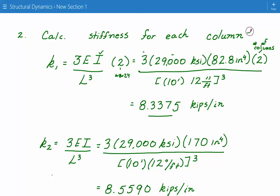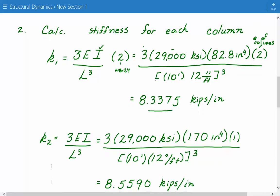If it was some other support condition like fixed, this would be a different expression. So we just plug in the numbers. 3 times 29,000 KSI times the second moment of inertia, which is 170 inches to the fourth power. And in this case, we're not going to multiply by 2. We just multiply by 1. It's already assumed there since there's only one column. One column that's W10 by 33. And then we divide by the length. And we get 8.5590 kips per inch.